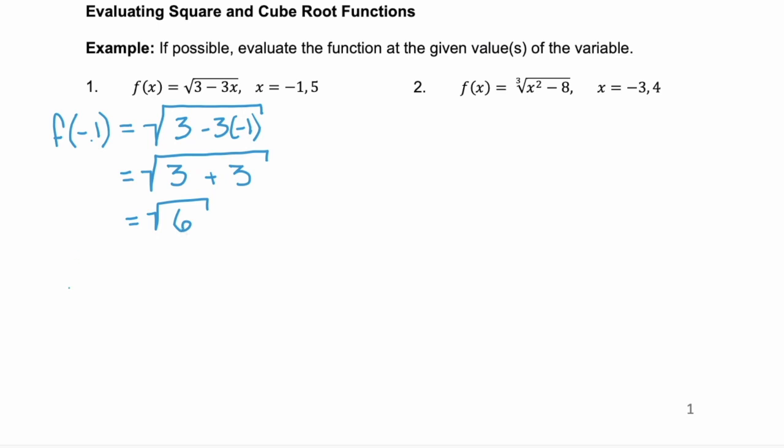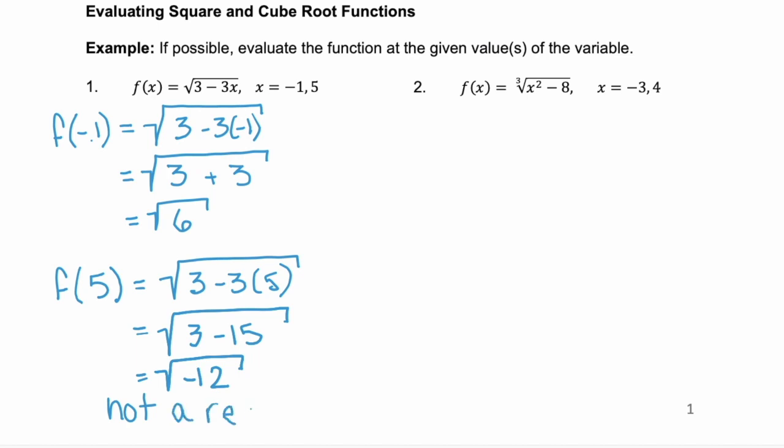And then we need to find the function of 5. And the function of 5, we have the square root of 3 minus 3 times 5, which is the square root of 3 minus 15 or the square root of negative 12. And remember, we can't take the square root of a negative number because it's imaginary. So right now we can just write not a real number.